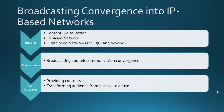Next is applying broadcasting convergence into IP-based networks. In order to do that there are several processes that need to be considered. First of all, from the enabler — a company that provides the network infrastructure and related services. The enabler has to consider content digitalization and IP-based networks, as well as providing high-speed networks for 4G, 5G, and FTTH and beyond. There is also a needed convergence of broadcasting and telecommunication in order to apply broadcasting convergence into the IP-based network.